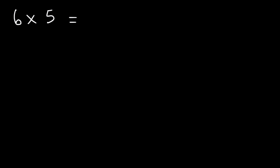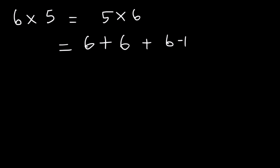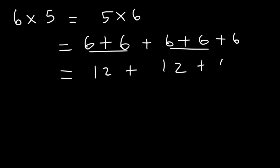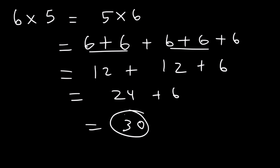So let's say if we want to find the value of 6 times 5, which is the same as 5 times 6. All we need to do is add 6 five times or add 5 six times — whichever is easier. 6 plus 6 is 12, another pair of 6s is 12, and 12 plus 12 is 24. Plus 6, that's 30. So 6 times 5 is 30.